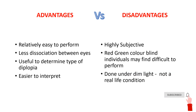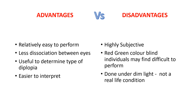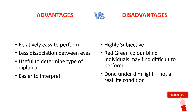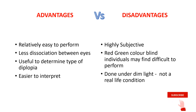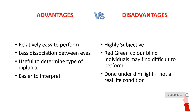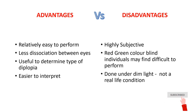Let us compare the advantages and the disadvantages of this test. Advantages are: it is relatively easier to perform, it has less dissociation between the eyes unlike the cover test, and it is a very good starting point to evaluate the different types of diplopia the patient might have, and is quite easy to interpret. Coming to disadvantages: it is highly subjective as it depends on the patient's response to evaluate the condition; red-green colorblind individuals may find it very difficult to perform the test; and it is done under dim illumination, which is not a real-life condition as it is not relevant to what the patient sees in normal day-to-day life.